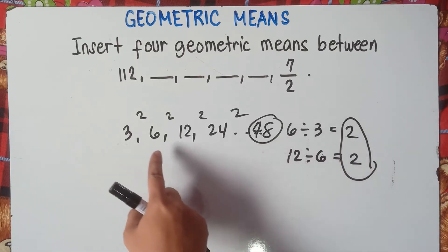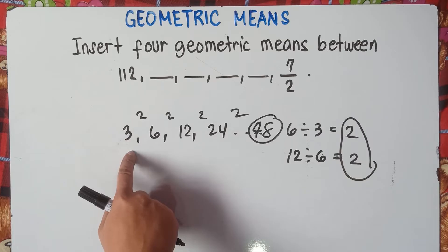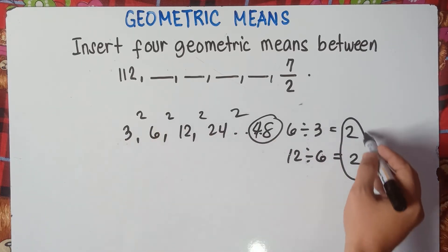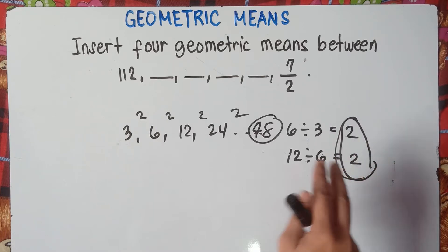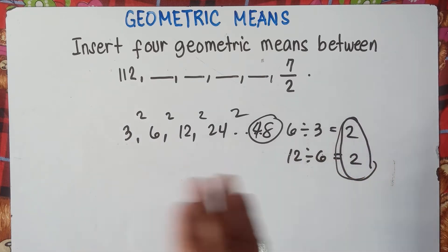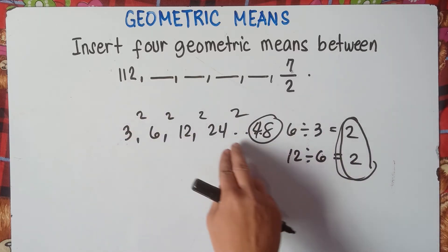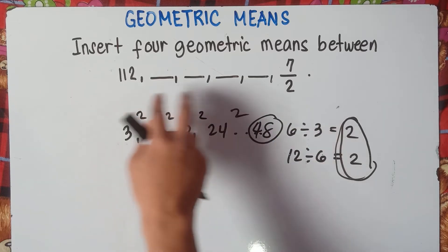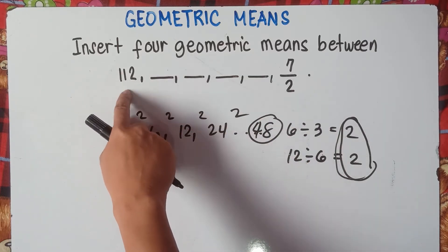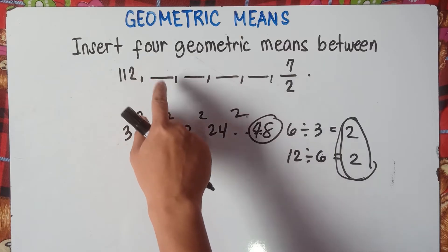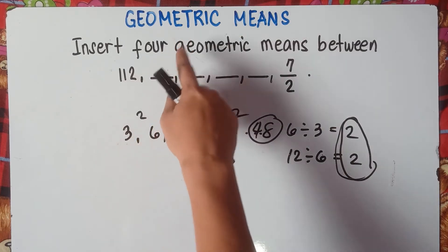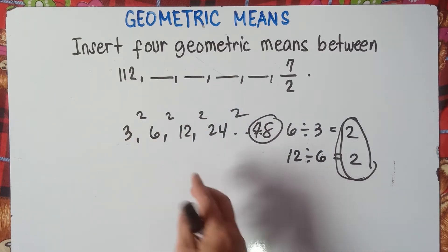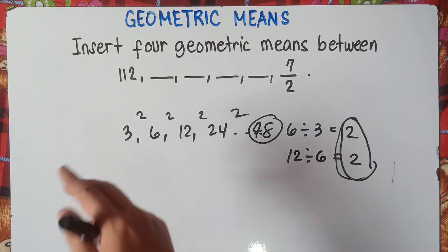To get the common ratio, divide the second term by the first term — that is 2. Divide the third term by the second term — that is 2. Once they have the same answer, that is the common ratio. Once you get the common ratio, you multiply to get the next term. So we can multiply 112 by the common ratio to get the next number.